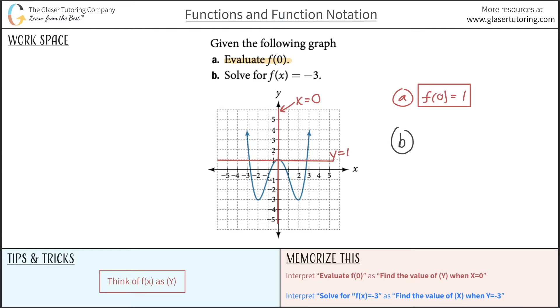So letter b here is now going to be solve for f of x equal to negative three. So in terms of how to interpret that, look at the bottom. I want you to reinterpret solve for f of x equaling negative three.